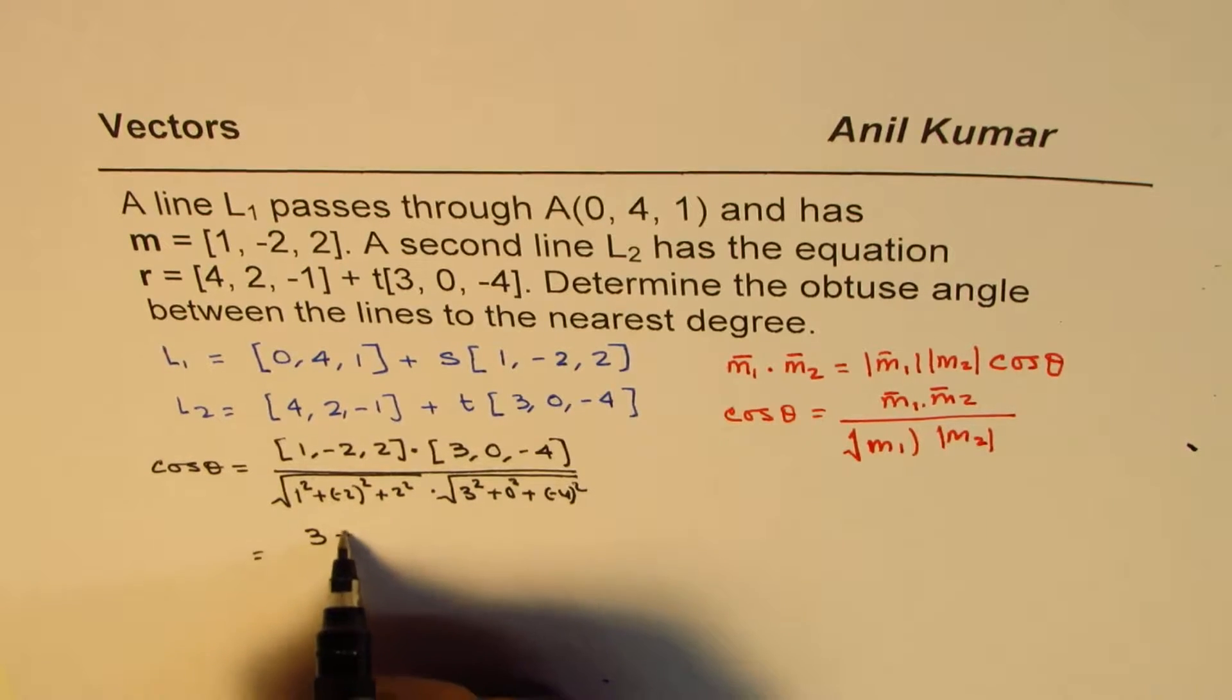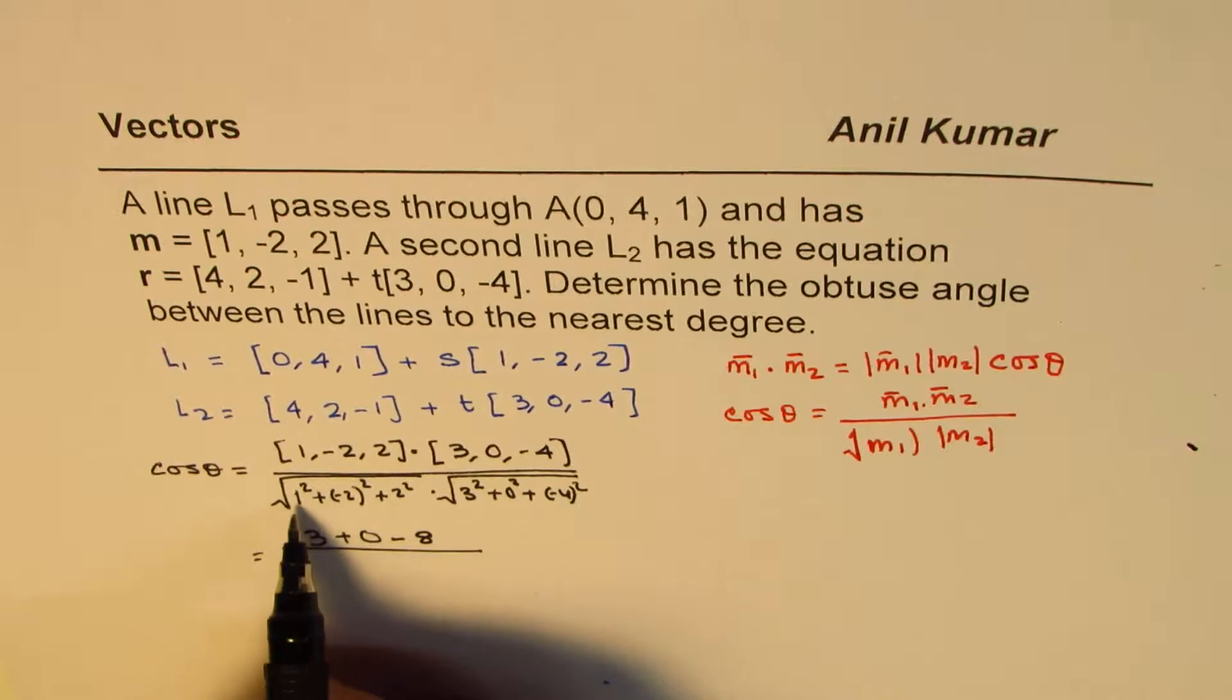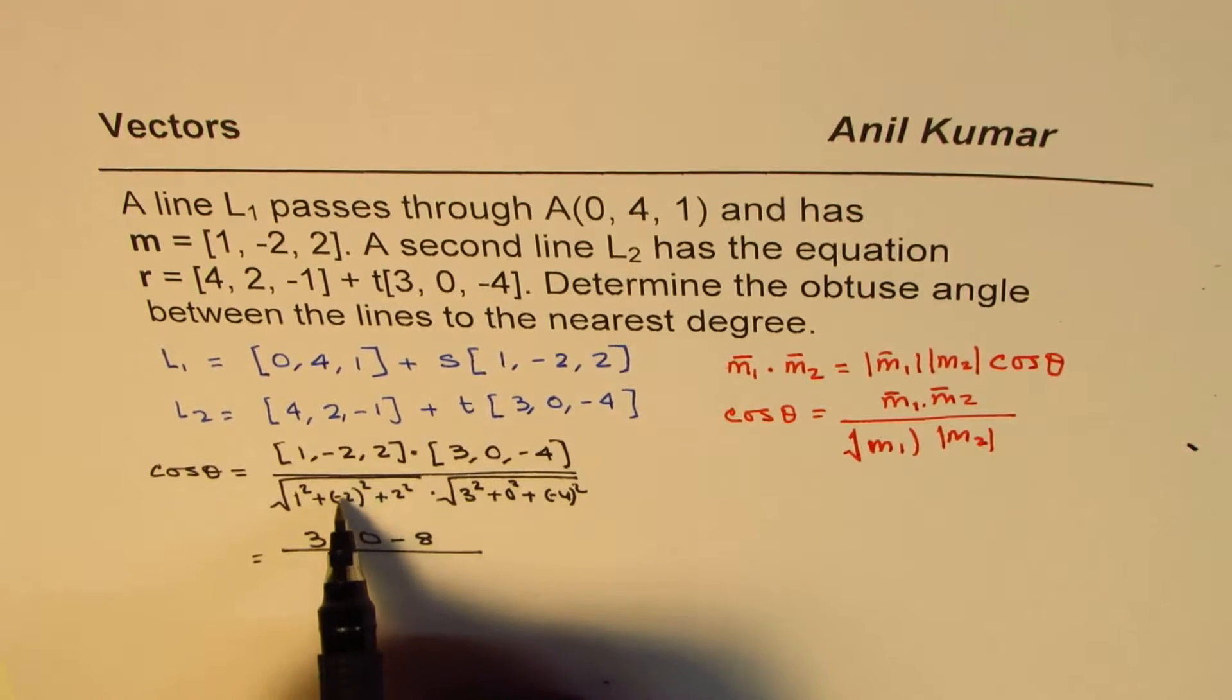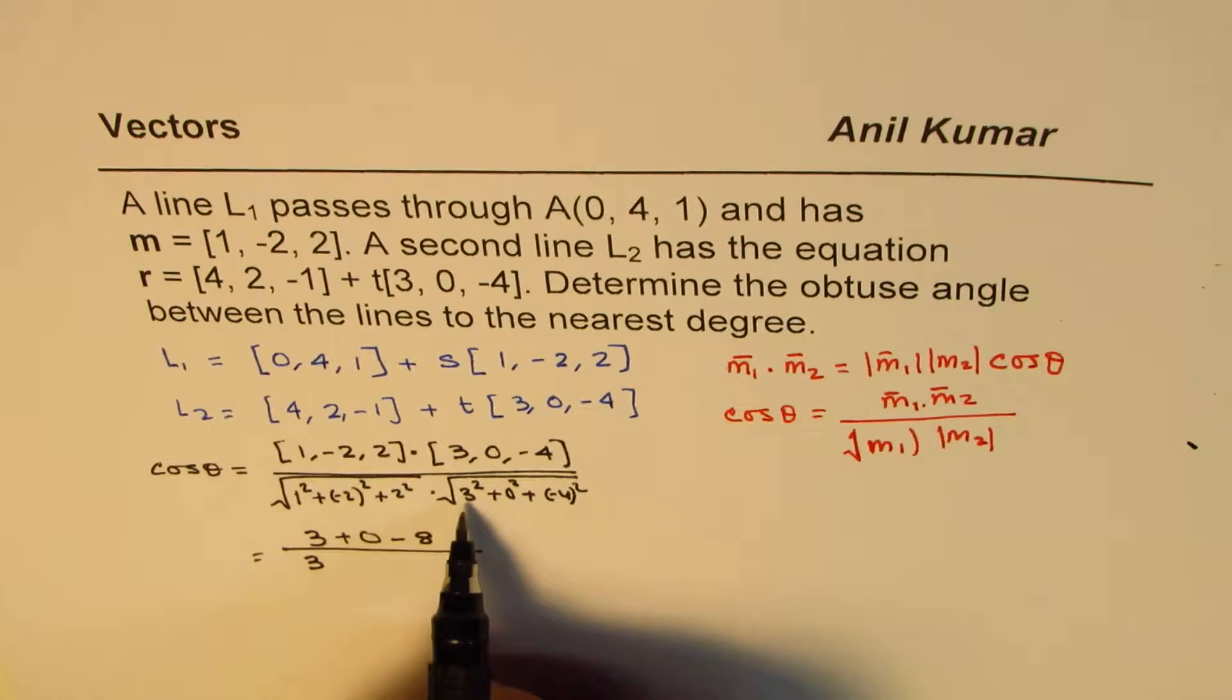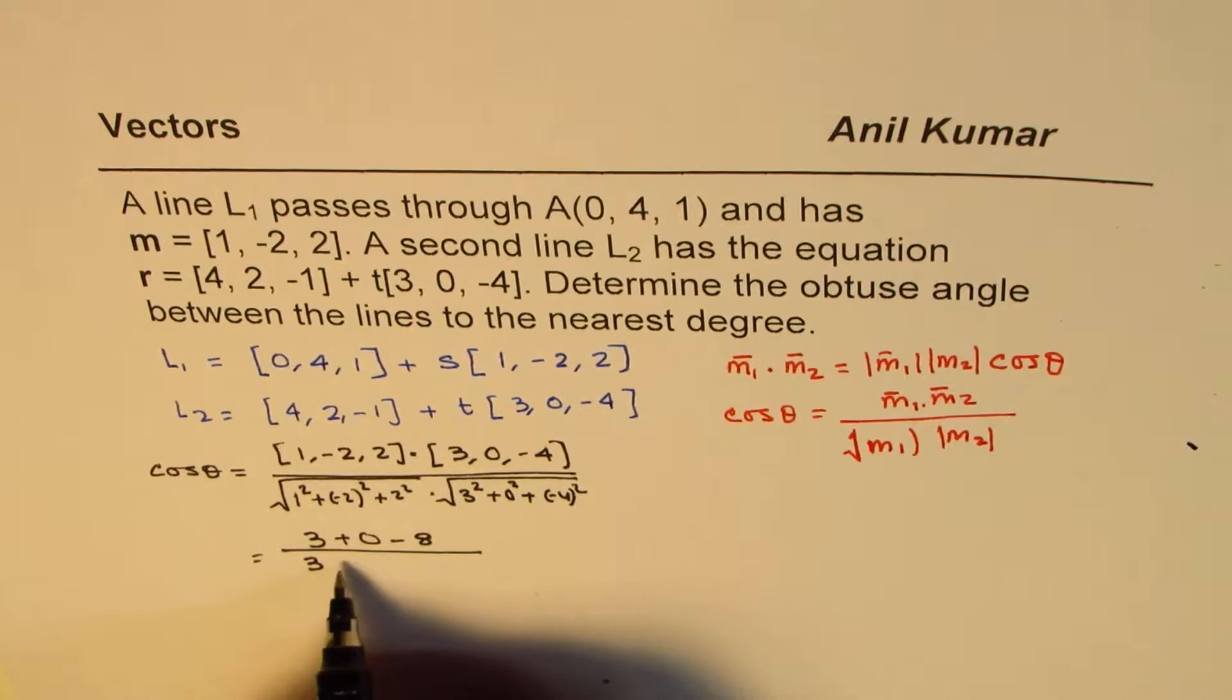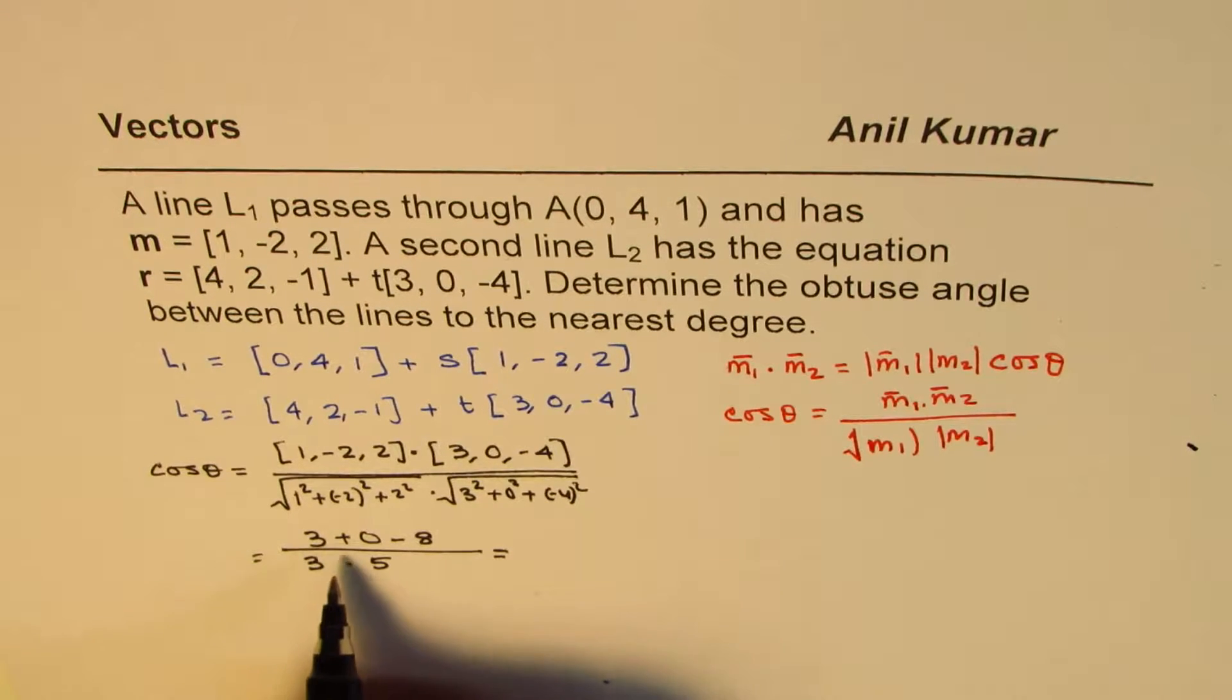So what we get here is 1 times 3 is 3, minus 2 times 0. 2 times minus 4 is minus 8 divided by this square. We can always use the calculator to find this answer. Anyway, this is 4 plus 4, 8. 8 plus 1, 9. Square root of 9 is 3.